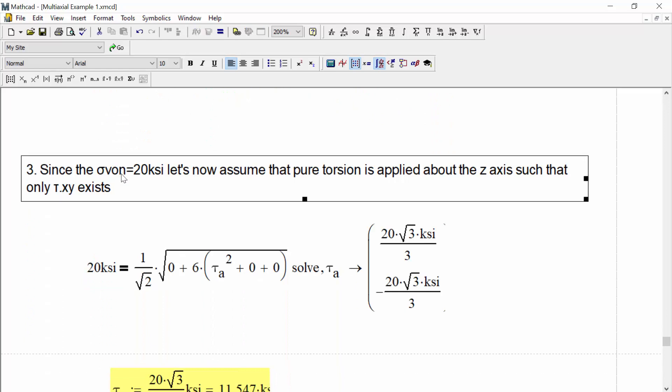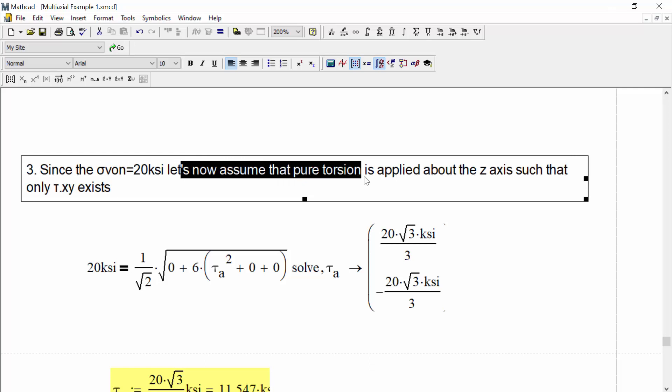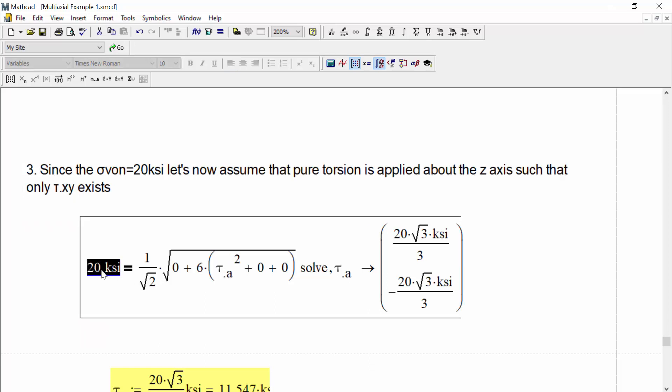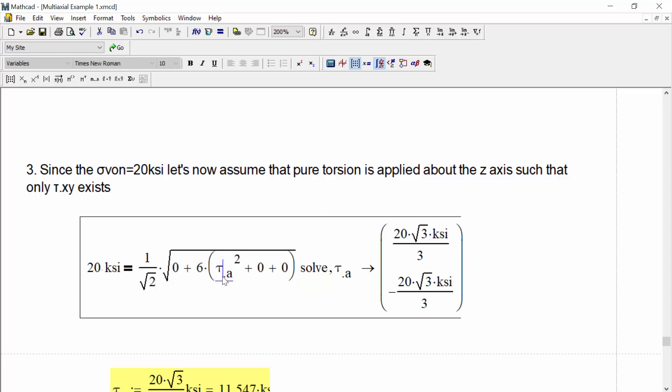Now, since the von Mises stress that we calculated is 20 KSI, let's now assume the pure torsion case, and let's assume that it's applied about the z-axis such that only tau xy exists. So we're going to say that the left-hand side is equal to the 20 KSI we found, and the right-hand side is the state of stress for our pure shear fatigue test. And when we do that, the only thing that exists is tau xy. We replace that with tau a, and we solve for tau a.